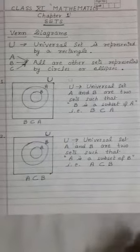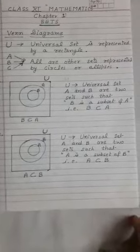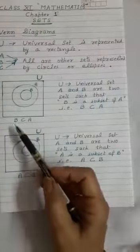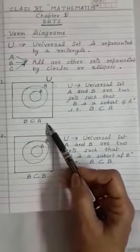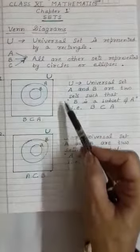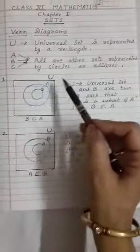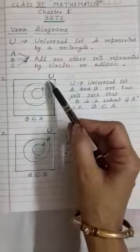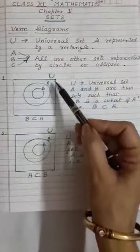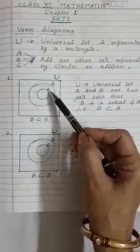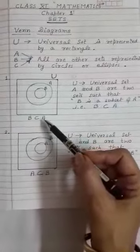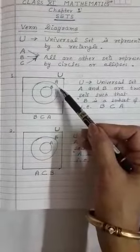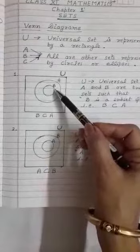Now first, if you want to show B is a subset of A, then how to represent? First we have to make a rectangle—that is called a universal set. Then this is a set which is A, this is a set which is B. And as B is a subset of A, B ke sare elements A ke andar hai, that's why B is here inside A.